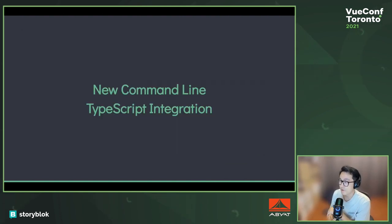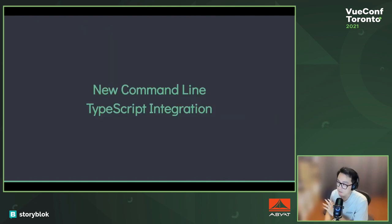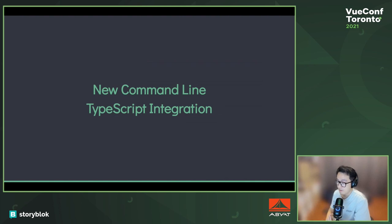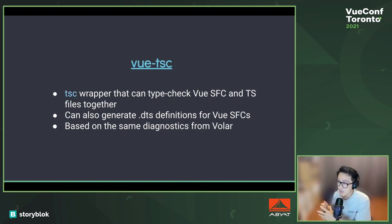Volar will be the new recommended extension, especially if you're using Vue 3 and TypeScript. The next is new command line TypeScript integration. In the past, one of the pain points when using TypeScript with Vue was being able to type-check expressions inside your templates. Now with the IDE extension we're able to do that. But how about the command line? Volar provides an additional tool called Vue TSC — a command line tool that wraps TSC, requiring TypeScript as a peer dependency, so that we can type-check Vue single file components and TS files together from the command line.